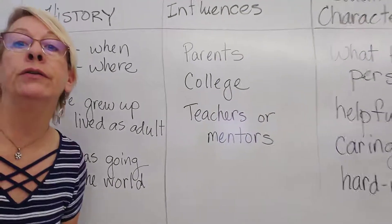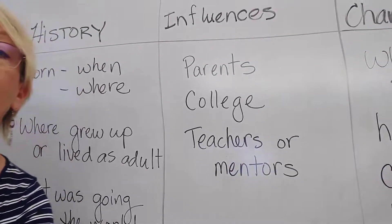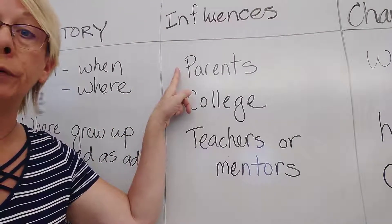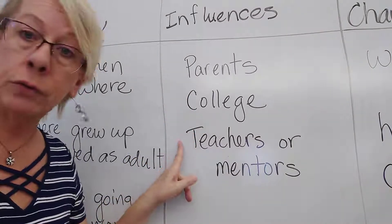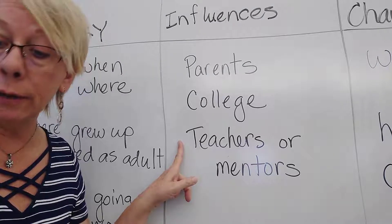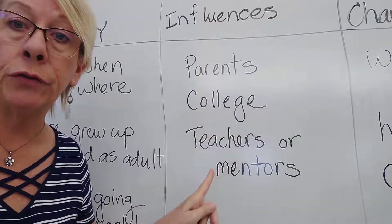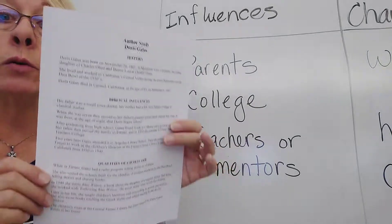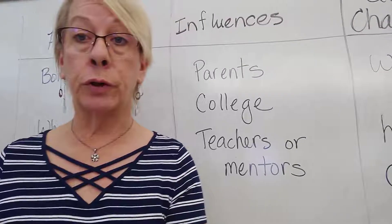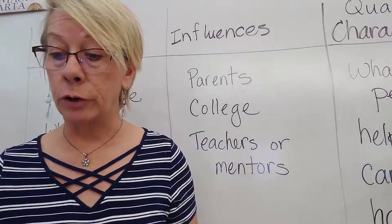The next section is influences. When you influence somebody, you affect them either for good or for bad, and the direction of their life can change because of it. Major influences in most people's lives include their parents, where they went to college, teachers or mentors, pastors, bosses, friends. Let's read the biblical influences section on your paper and highlight the things we're going to put in this section. Don't write these things yet — we'll highlight here and then write them in the biblical influences column after the video.